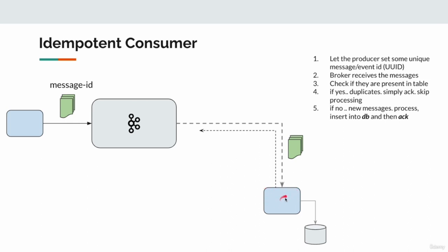This is how we make our application an idempotent consumer. Remember that this is the application we own — it is our responsibility to keep it safe. It is not Kafka's problem. What if the producer does not have message IDs? In that case, each and every message contains useful metadata: which topic, which partition, which offset, date and timestamp. We can use all these combinations — topic, partition, offset — as a composite ID and log that information if the message does not have a message ID.